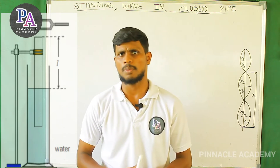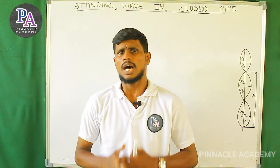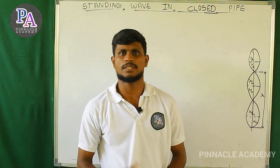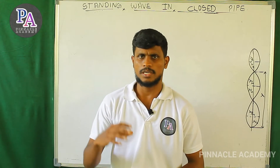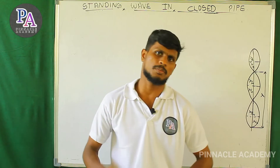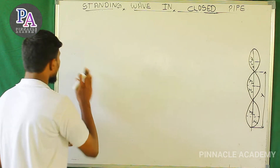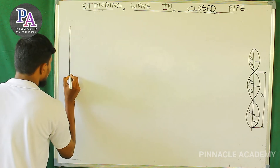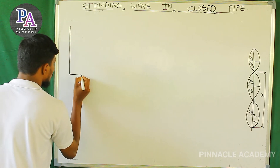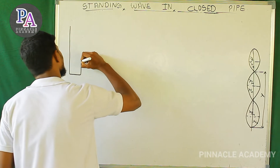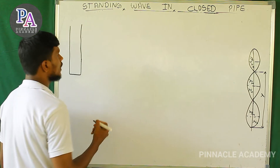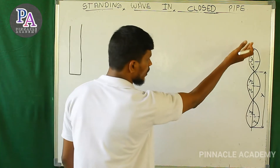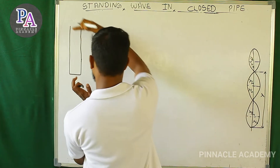The length of the air column gives resonance. Let's do the derivation for this closed pipe. We have a closed pipe — now let's make it closed at one end and open at the other. With the first mode of vibration, this is the wave pattern for the closed pipe.